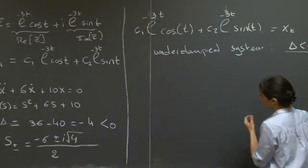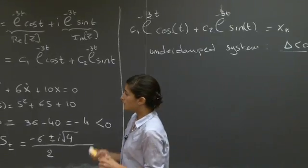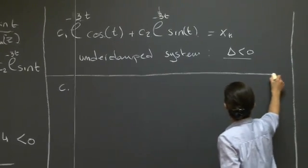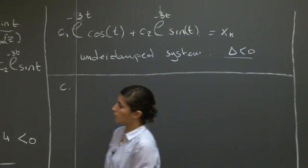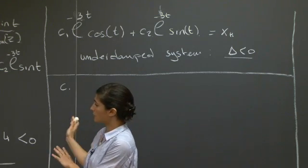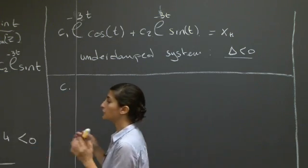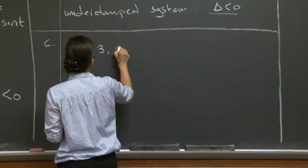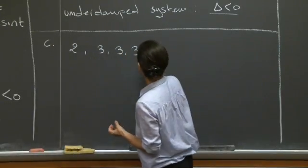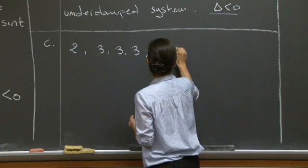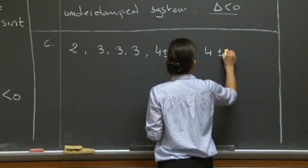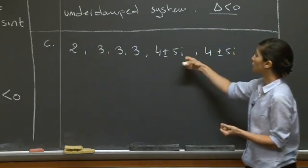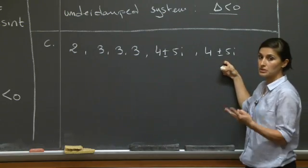For the last part, we move from a second-order equation to a higher-order differential equation of eighth order. We are given eight roots: the real root 3, repeated three times, and the complex roots 4 plus or minus 5i, each repeated two times.